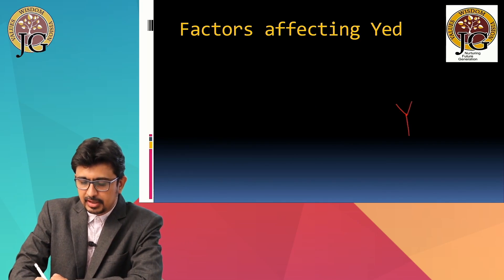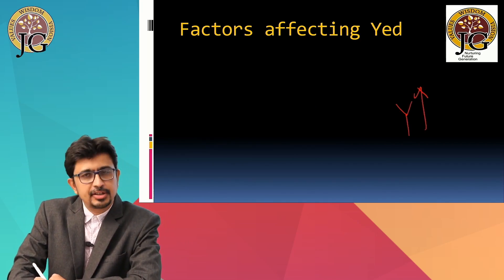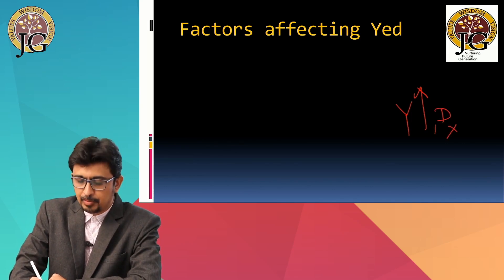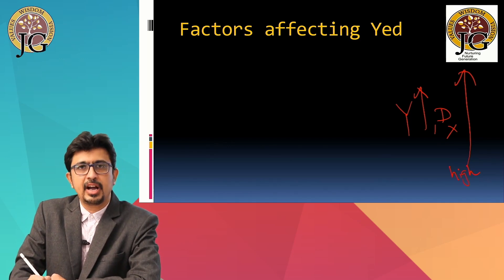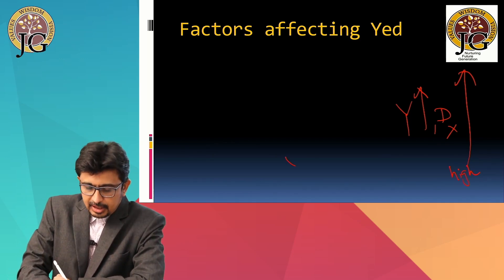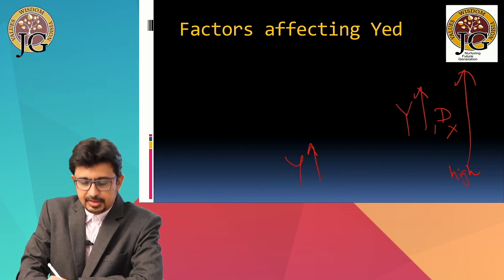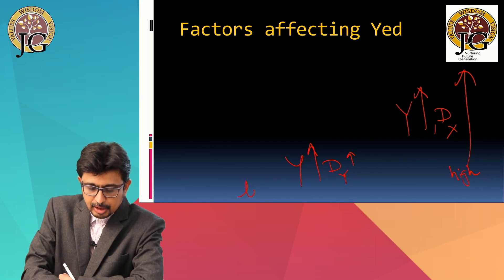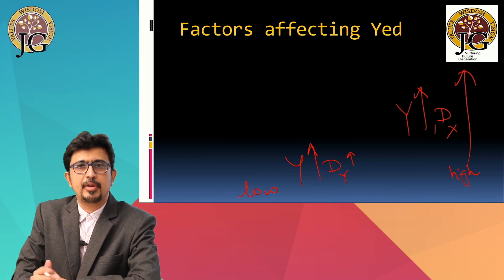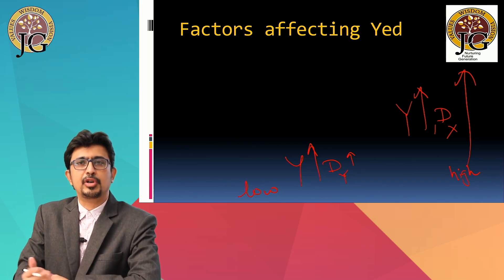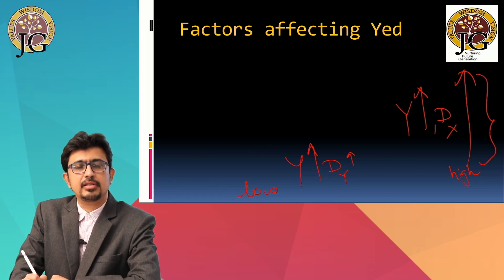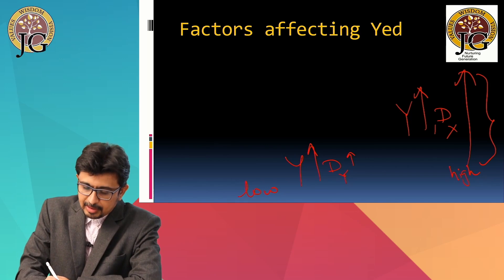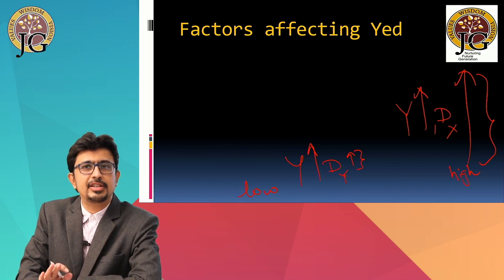If the consumer's income increases and as a result, the consumer increases the demand for a particular product by a very large extent, then we say that the income elasticity of demand for that product is very high. On the other hand, if income increases but the consumer increases demand only slightly, then the income elasticity of demand is very low. Income elasticity of demand basically means the extent of change in demand because of change in the income of the consumer. Greater the change in demand, higher is the income elasticity of demand.